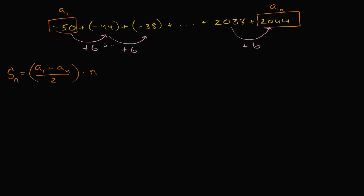And to think about that, we just say, well, how many times do we have to add six to go from negative 50 to 2044? Well, 2044 minus negative 50, that's the same thing as 2044 plus 50, or 2094. The whole reason I calculated this is I want to figure out how far do I have to go from negative 50 to 2044. I have to go up 50 just to get back to zero and then go up another 2044. So I have to go up by 2094.